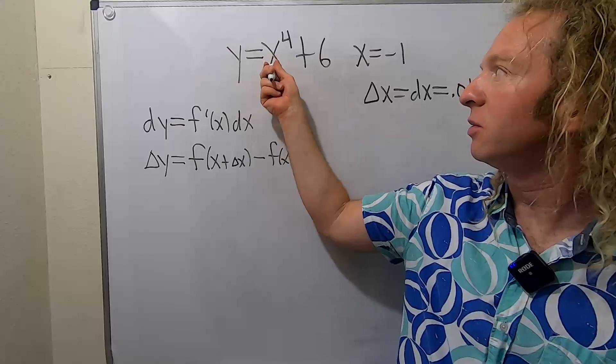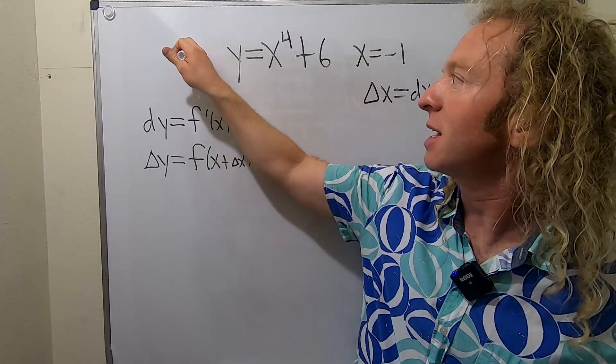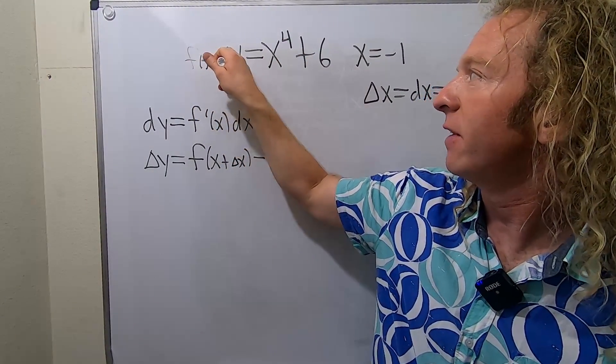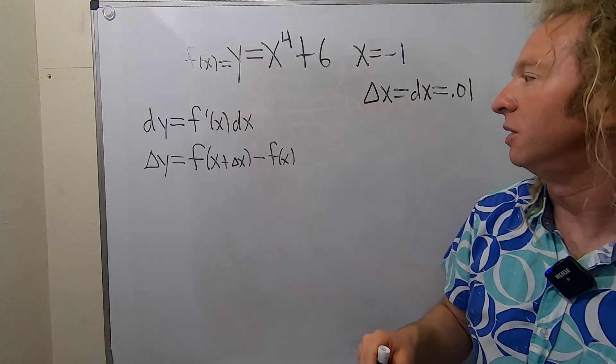Now here, y equals x to the fourth plus 6. That's our function, so f of x equals x to the fourth plus 6.